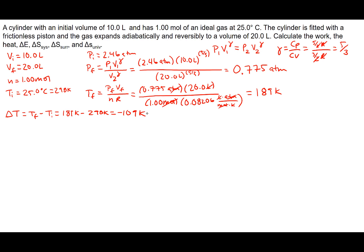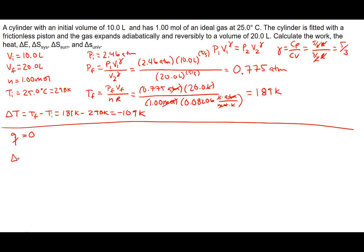Working through the problem, a few values we can identify right away: in an adiabatic process, Q = 0. That's a defining characteristic of an adiabatic process. This also tells us that ΔE will be directly equal to whatever work is done. Additionally, because we're dealing with a reversible process, ΔS_universe = 0.